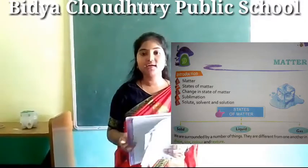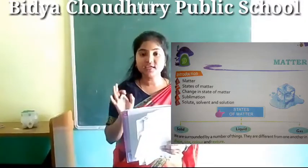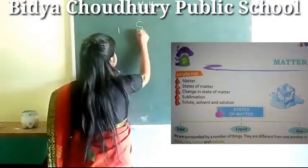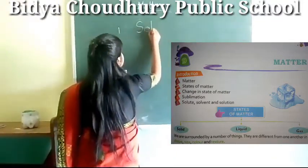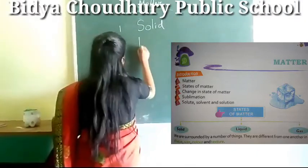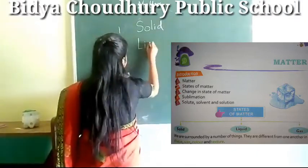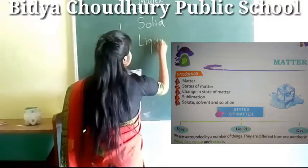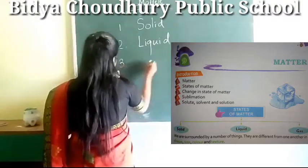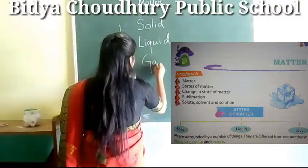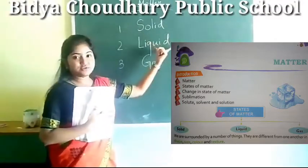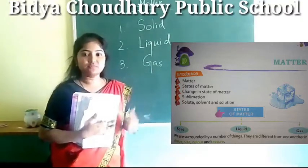See states of matter. What are the 3 states of matter? Number 1: solid. Number 2: liquid. And number 3: gas. So these 3 are the states of matter.